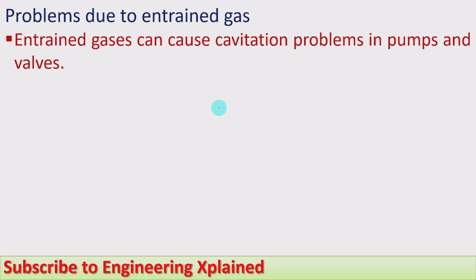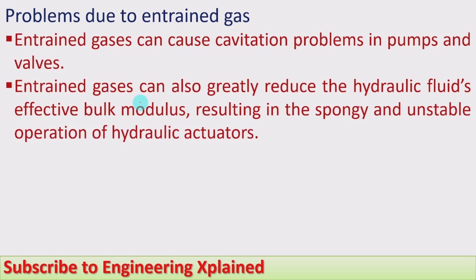Entrained gases can cause the cavitation problem in pumps and valves. Cavitation means that at a lower pressure region, when flowing through the pipeline, vapor is formed due to low pressure reaching the vapor pressure. When the fluid moves to pumps and valves where pressure increases, those bubbles collapse, and during collapsing, pitting of the surface takes place — the surface gets damaged. Entrained gases can also greatly reduce the hydraulic fluid's effective bulk modulus, resulting in spongy and unstable operation of the hydraulic actuator.